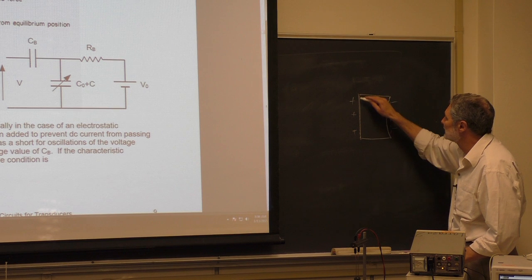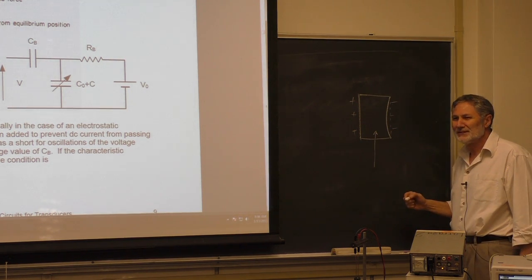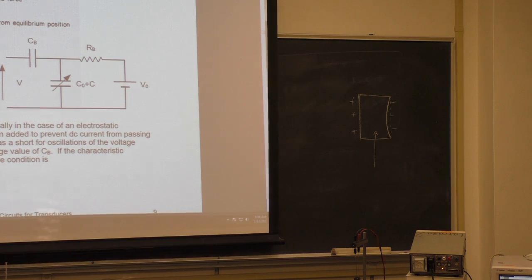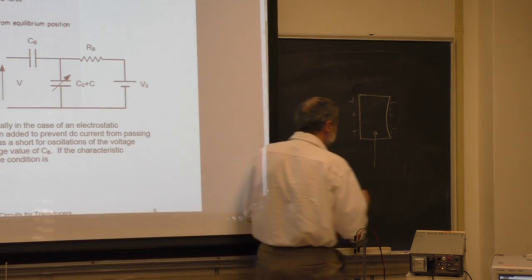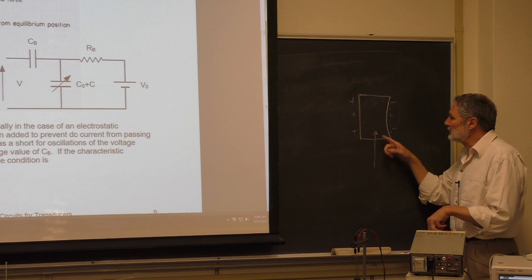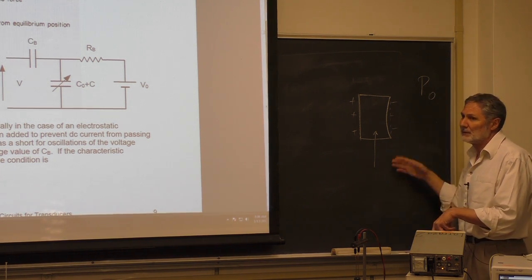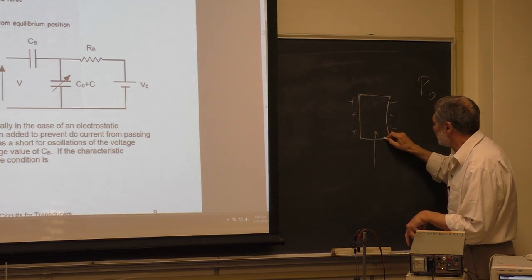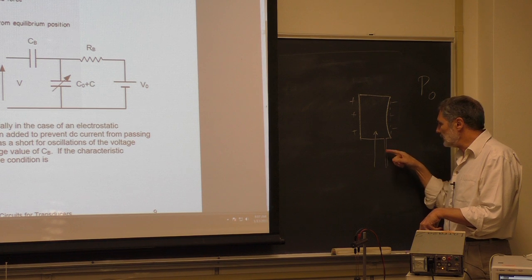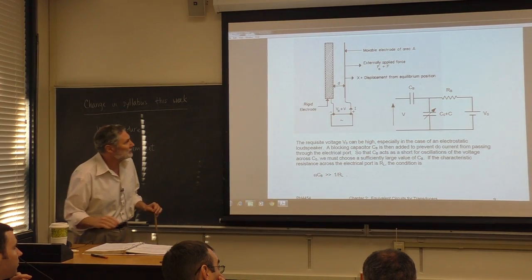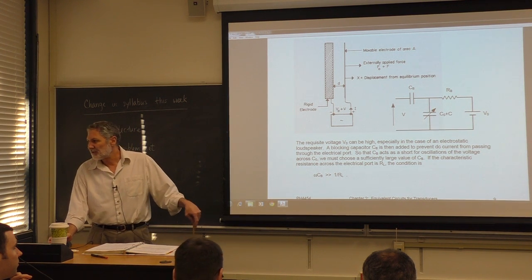Another approach: seal and pressurize the back cavity to push the membrane to the right equilibrium position. Some Brüel & Kjær microphones have a port — like a Eustachian tube — to equalize pressure on either side. There are different ways of solving problems when it comes to transducers.